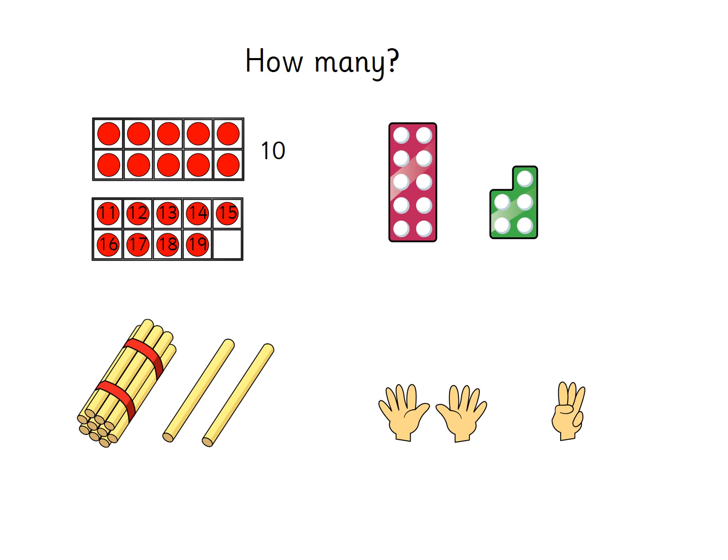Let's move over to the numicon — on the top line, starting with a purple block then going to green. We know that purple numicon block is worth 10, so we don't need to count it. Let's count on from 10: 11, 12, 13, 14, 15. That green numicon represents 5 — it has 5 holes — so 10 and 5 is 15.